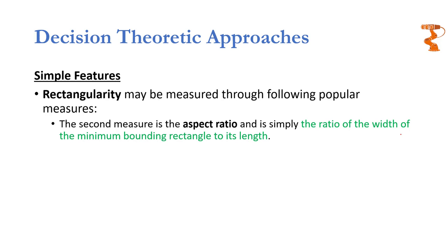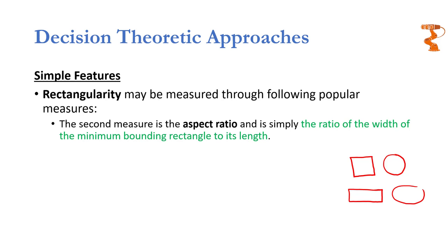Aspect ratio is simply the ratio of the width of the minimum bounding rectangle to its length. A square will have an aspect ratio of 1, and a circle will also have an aspect ratio of 1, whereas a rectangle will have an aspect ratio different from 1. The same applies to an ellipse or oval.